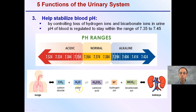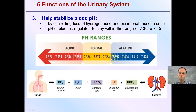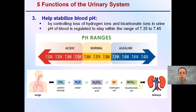Another function is to help stabilize blood pH. This controls the loss of hydrogen ions and bicarbonate ions in the urine, where the body can get rid of more of one or the other to keep pH in a very tight range — approximately 7.35 to 7.45. Looking at our equation: carbon dioxide plus water yields carbonic acid, which yields hydrogen ions and bicarbonate ions. The ratio of these determines pH, and the body adjusts this to maintain proper homeostasis.